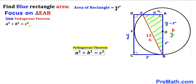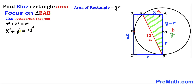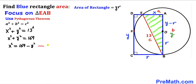Filling in the Pythagorean formula: x squared plus y squared equals 13 squared, which simplifies to x squared plus y squared equals 169. Moving y squared to the right-hand side gives x squared equals 169 minus y squared. We'll call this Equation 1.